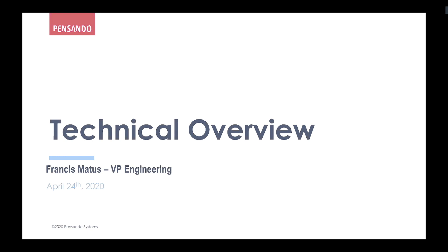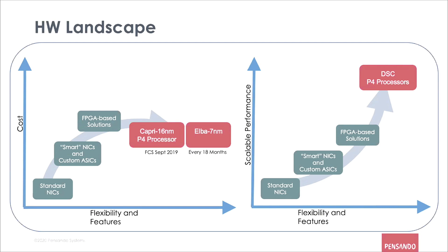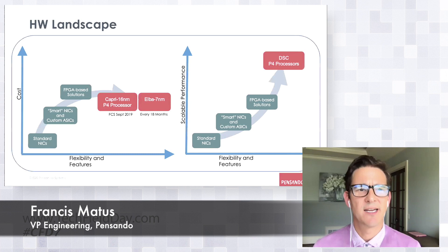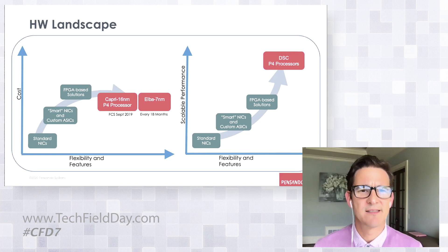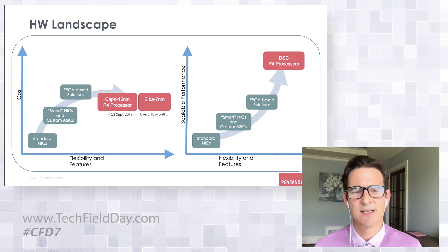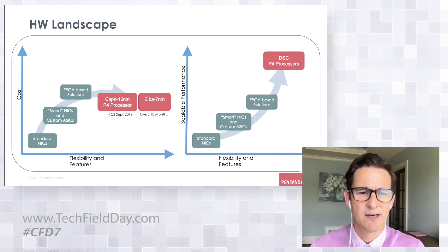When we started the company, we started looking across the hardware landscape to see what were the trends and where technology was heading, and how we could exploit 16 nanometer technology that gives you much better density and performance relative to previous technologies. We started figuring out how to get programmability while still delivering very high performance. Here I'm showing a relative scale of cost versus flexibility and feature capability.